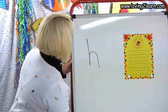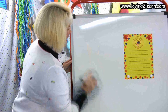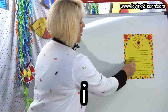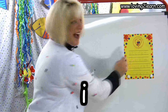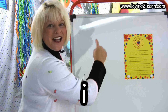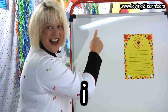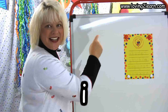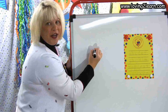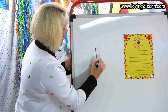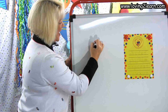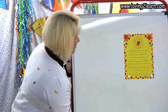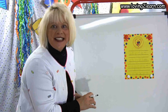The next letter is the letter I. We go straight line down, dot on top. Write it with me: straight line down, dot on top. We'll do it on the whiteboard: straight line down, dot on top. There's the small letter I.